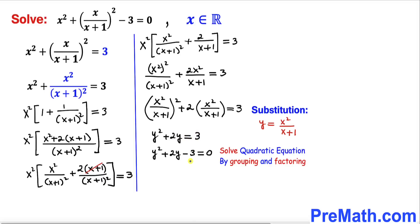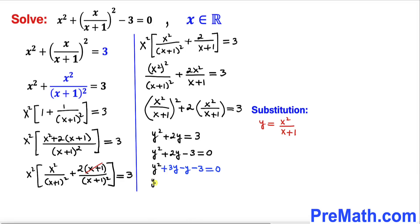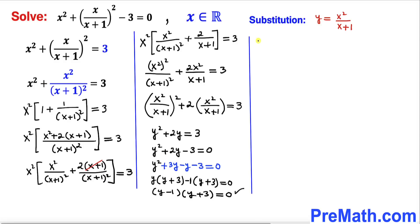Moving 3 to the left hand side gives us the quadratic equation y² + 2y − 3 = 0. We solve by grouping and factoring: rewrite 2y as 3y − y, then factor to get y(y+3) − 1(y+3) = 0, which gives (y−1)(y+3) = 0. So y − 1 = 0 or y + 3 = 0.